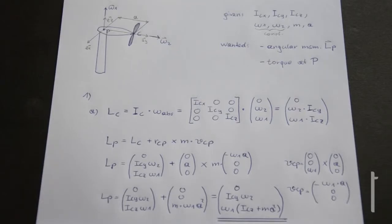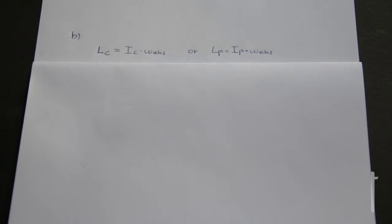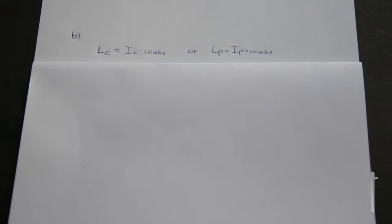An alternative method to find LP avoids the cross product formula entirely. As mentioned in the introduction video, under certain conditions you can convert LC to any point like P directly. The requirement is that both points lie in the same body — for example, both point C and point P lie on the head of the wind turbine.